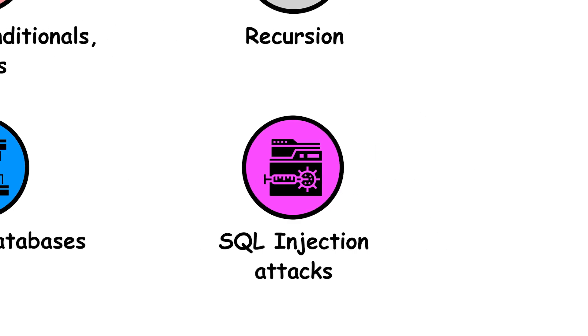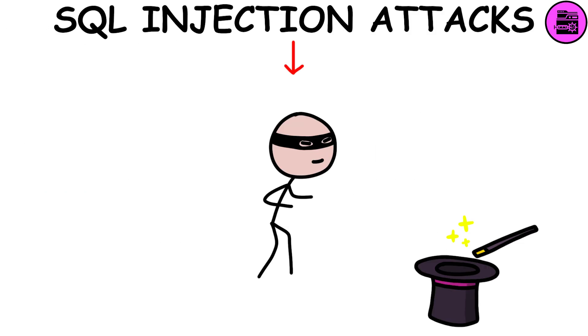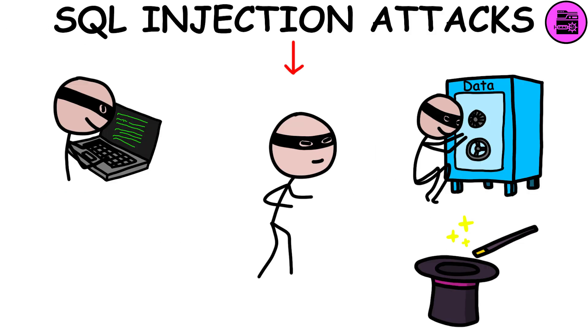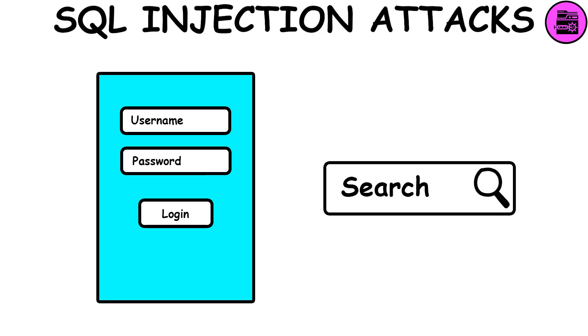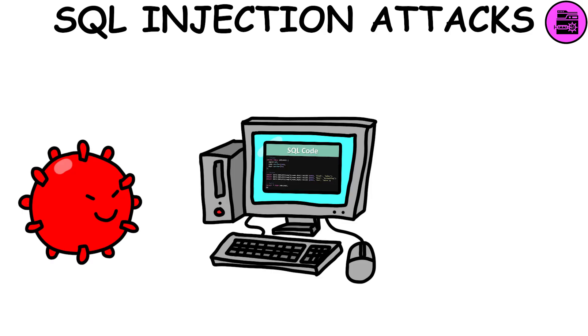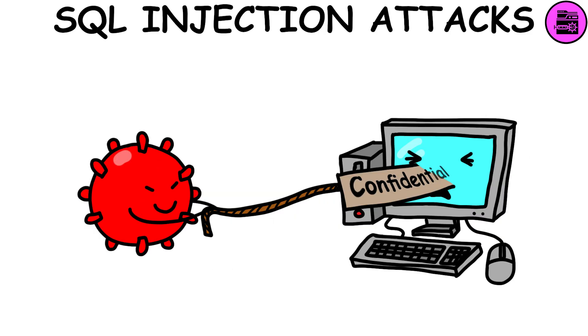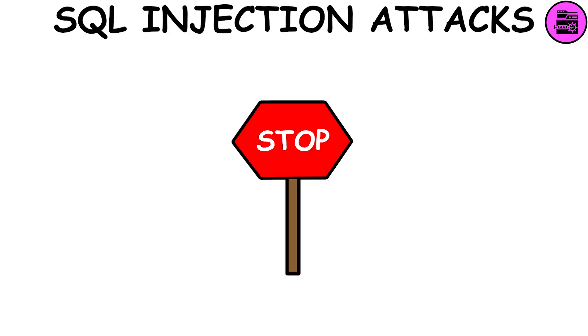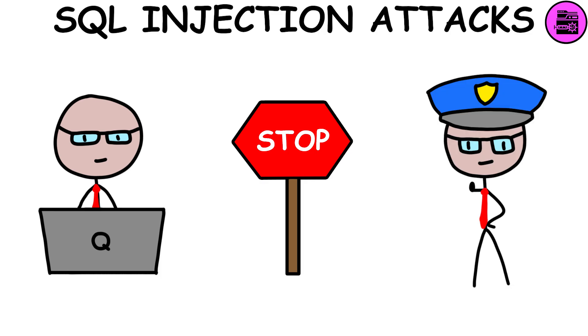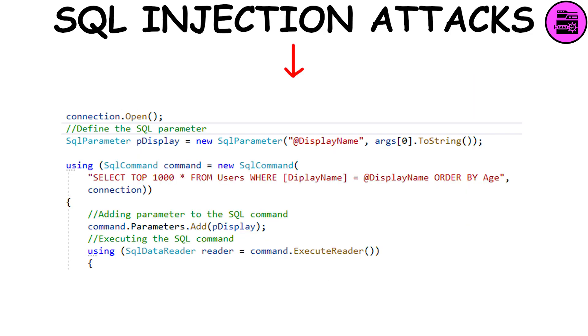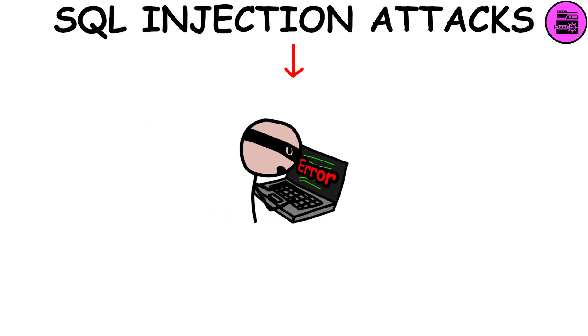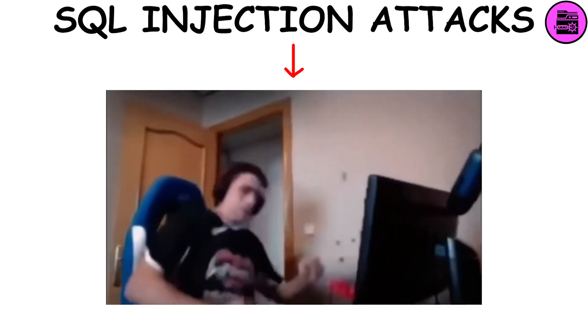SQL injection attacks are sneaky tricks used by hackers to break into databases through vulnerable websites. They do this by slipping malicious SQL code into places where users can input data, like login forms or search boxes. Once the code gets into the system, it can mess with database queries and extract all sorts of sensitive information, like usernames and passwords. To stop these attacks, developers need to tighten security measures, like checking and validating user input, and using techniques like parameterized queries, which make it harder for attackers to pull off their tricks.